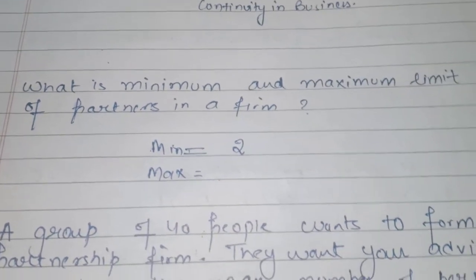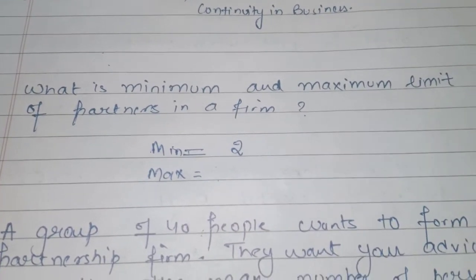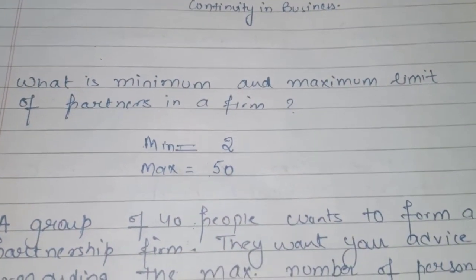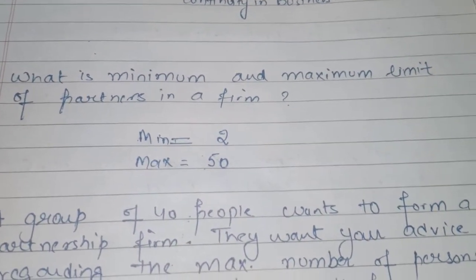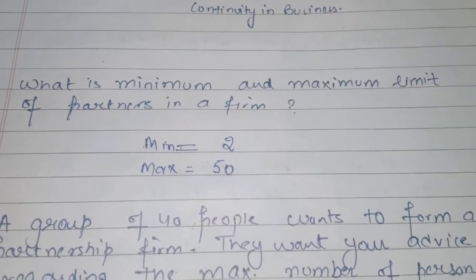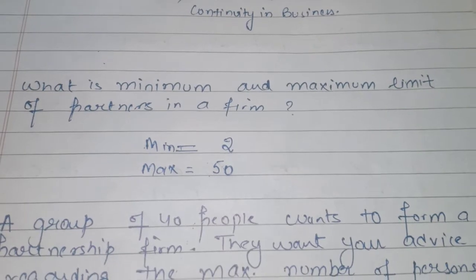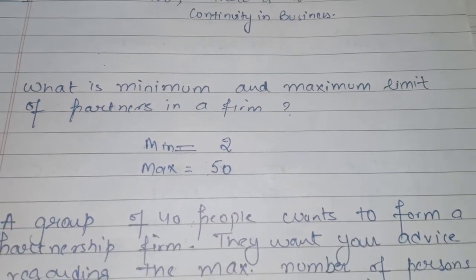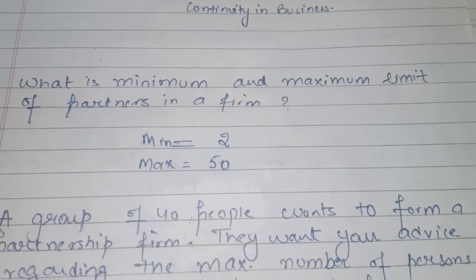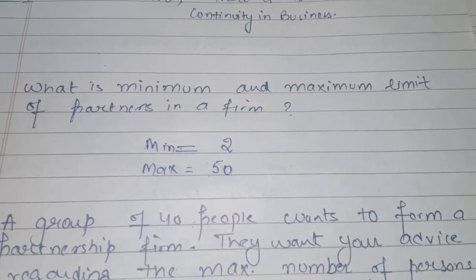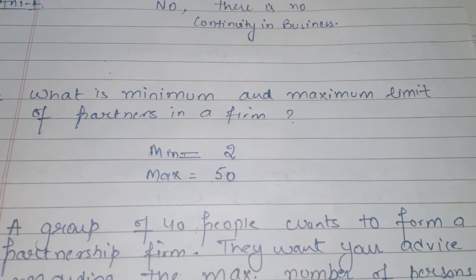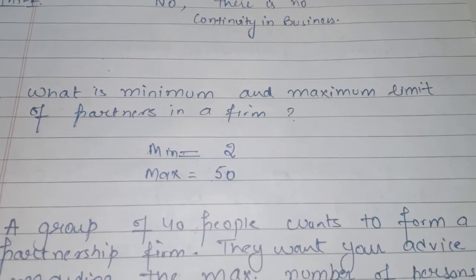But the central government has currently allowed only fifty partners. The maximum could be one hundred if the central government were to notify that. But currently, as per Companies Miscellaneous Rules 2014, the maximum is specified as fifty members. So minimum number of partners is two and maximum number of partners is fifty.